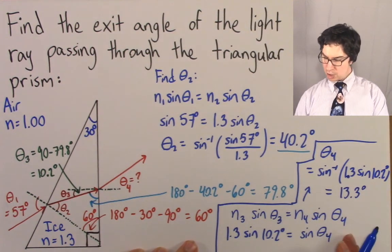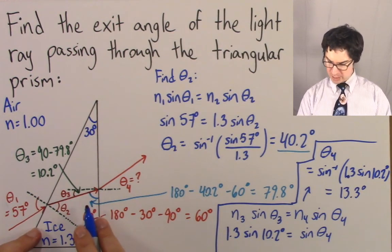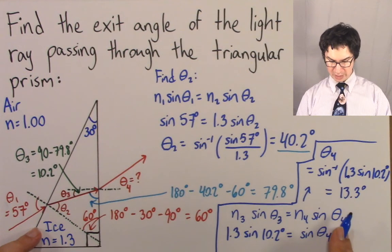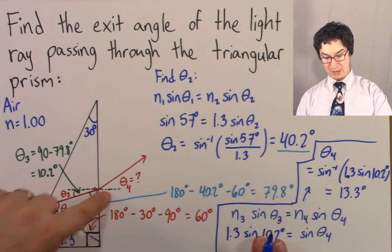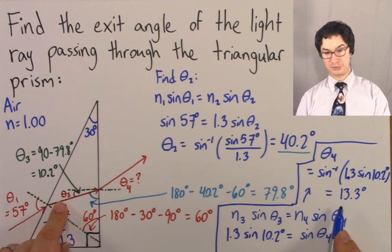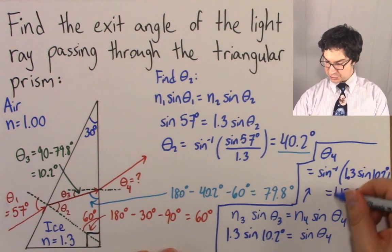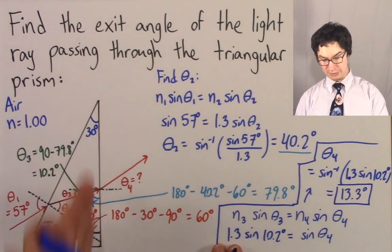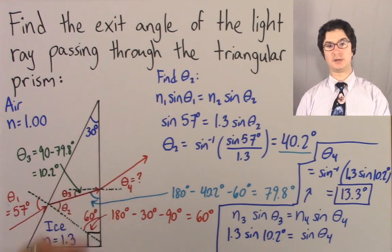Is that consistent with our diagram? Yeah, it's not too bad. Theta 3 is only 10.2 degrees, and the light bends away from the normal, so theta 4 has to be bigger than 10.2 — and it is, 13.3 is bigger than 10.2. So directionally it's correct. The light ray exits the triangular prism at an angle of 13.3 degrees relative to the normal. Thanks for watching.